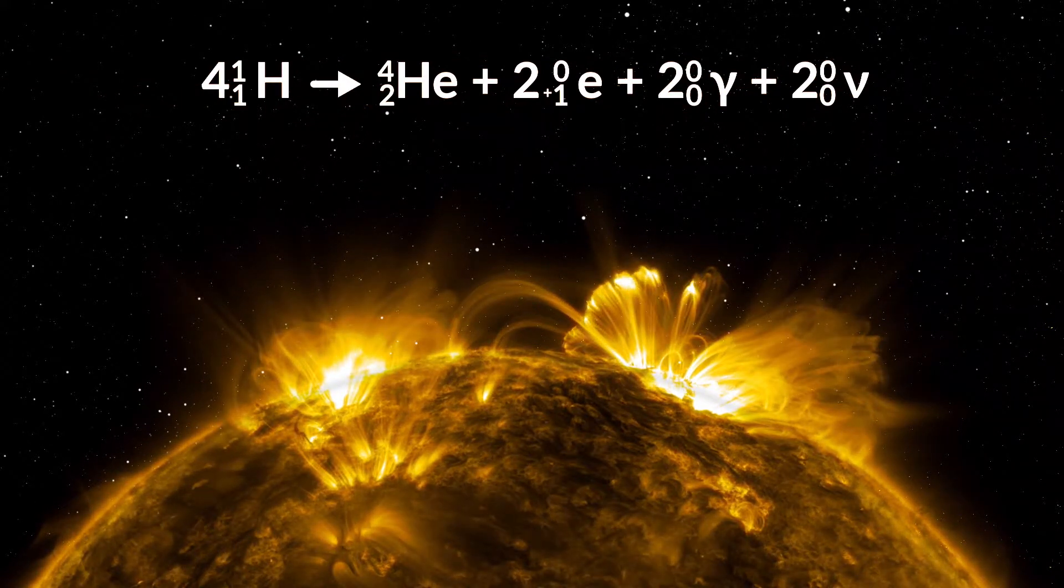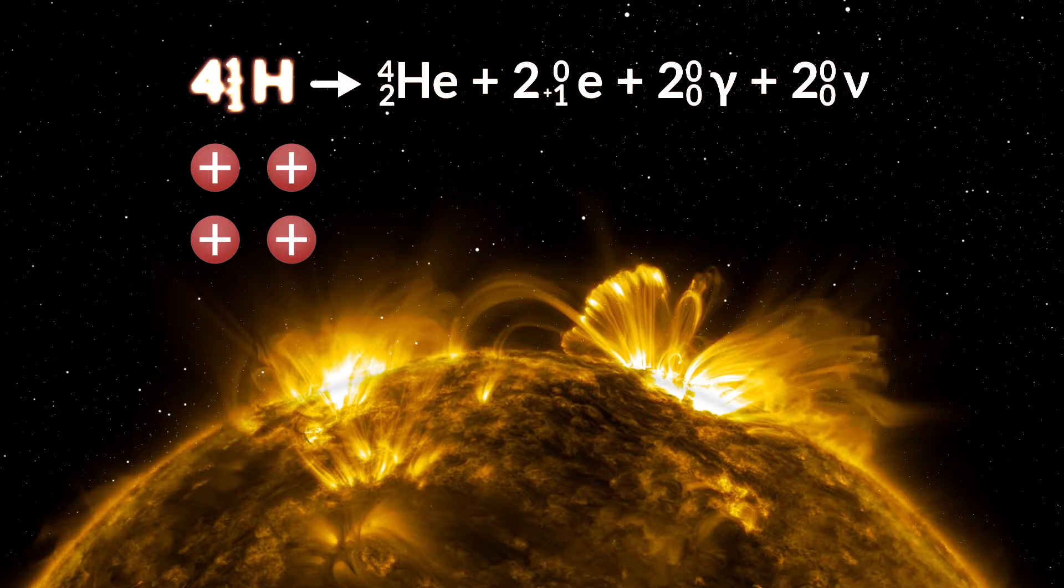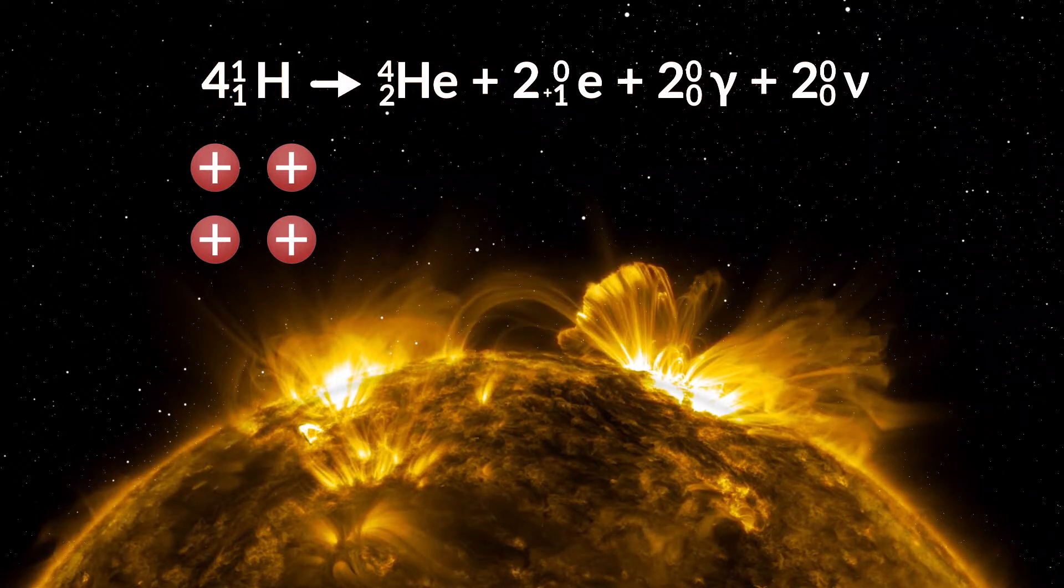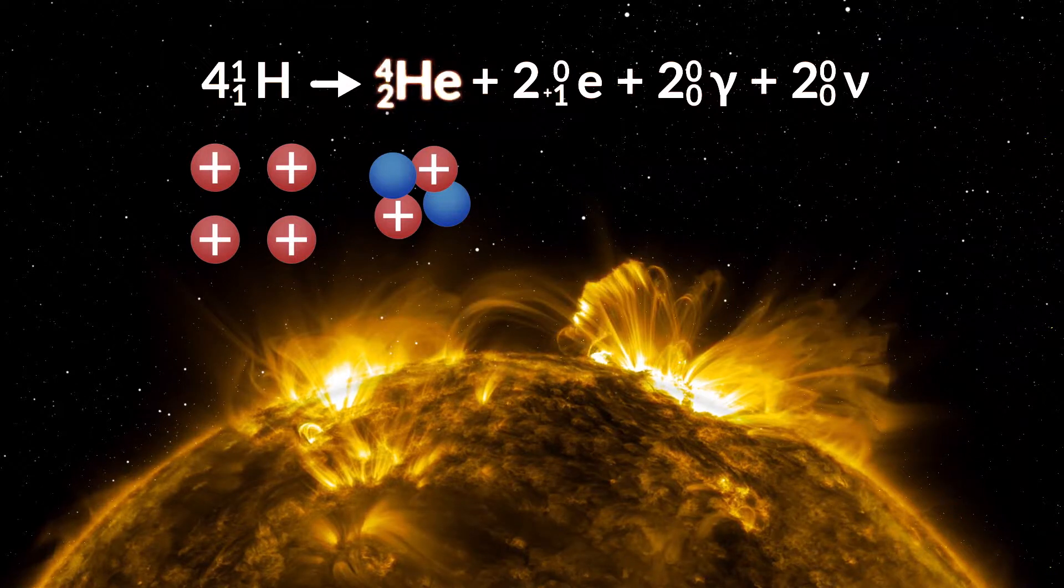The starting material, four hydrogen nuclei, is on the left of the reaction arrow. On the right side, the products of the reaction. A helium nucleus with two protons and two neutrons.